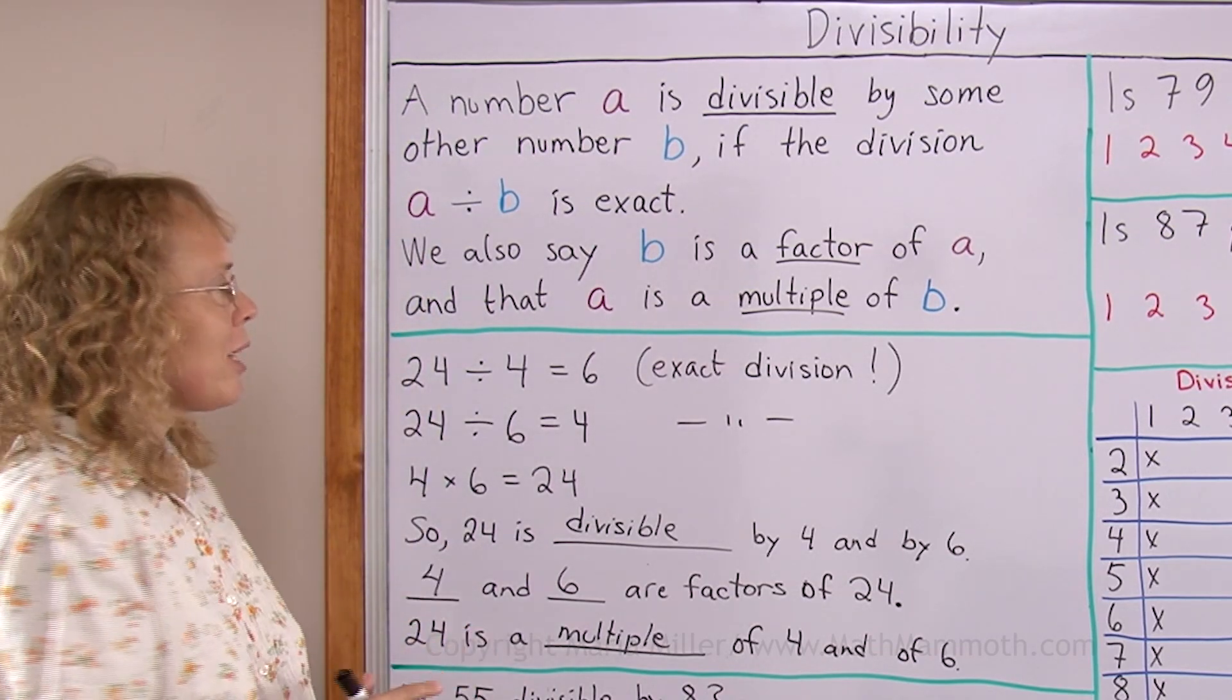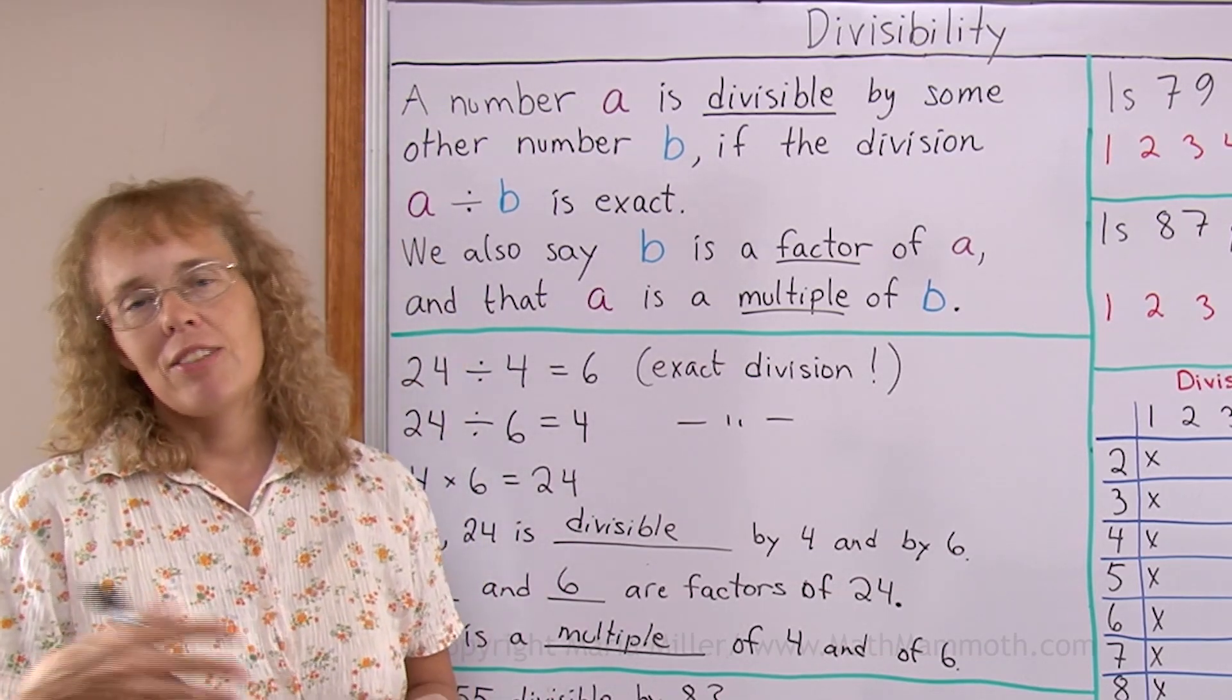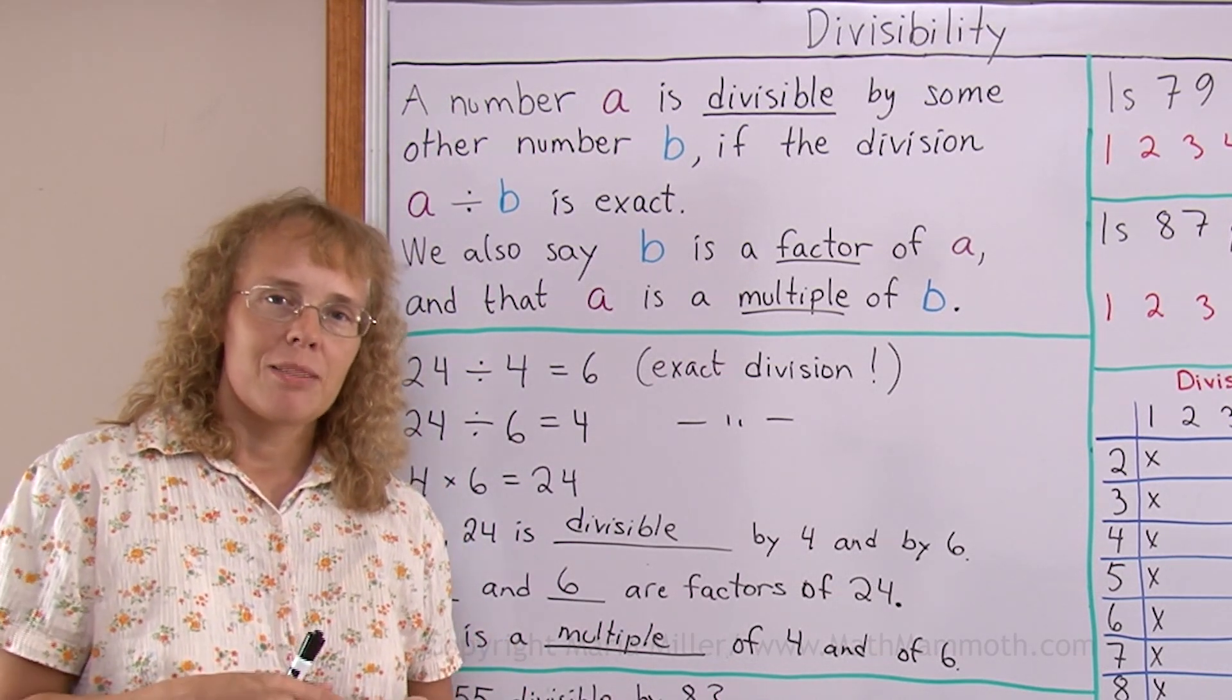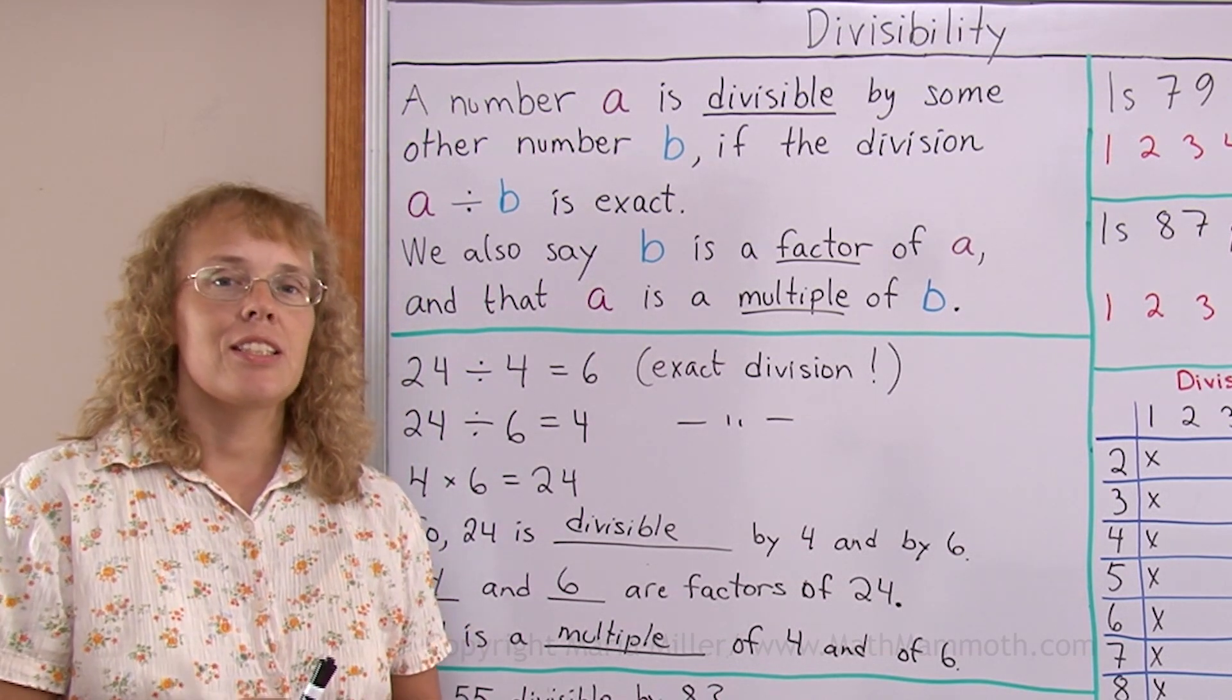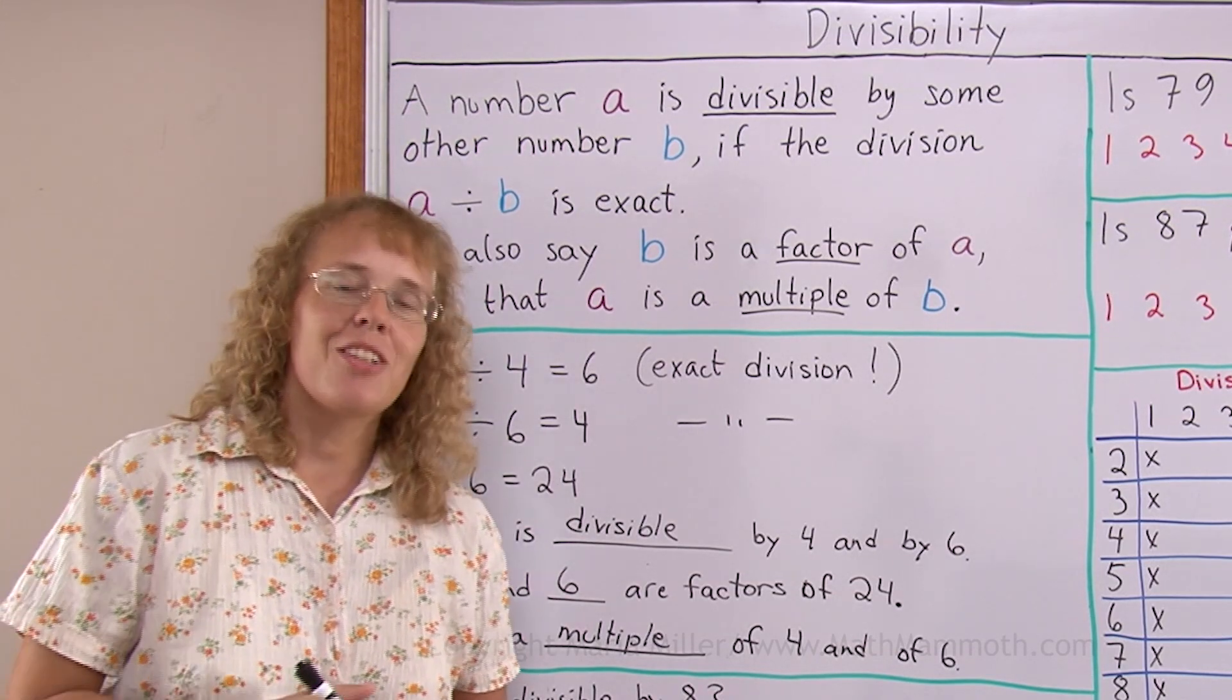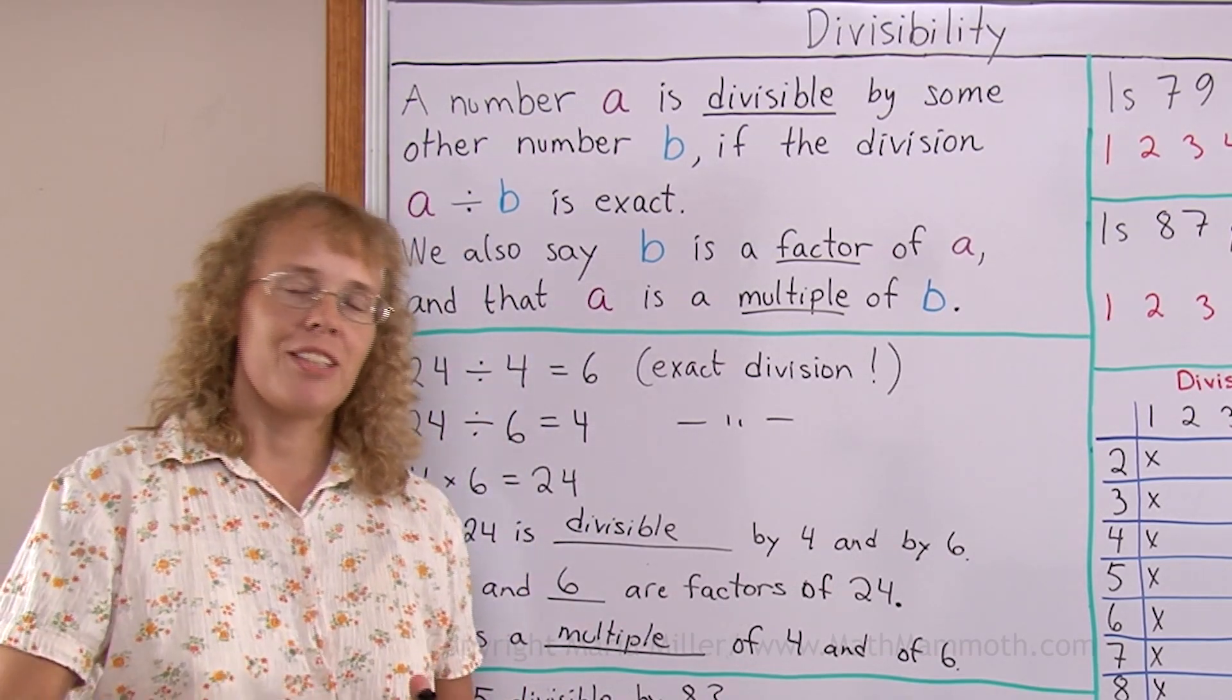And then multiples of 6 would be whenever you multiply something times 6. You might have 5 times 6 or 15 times 6 or 2,400 times 6. But multiples of 6 would be the multiplication table of 6, those numbers that are in the skip counting pattern by 6: 6 and 12 and 18, 24, 30, 36 and so on. Those are multiples of 6, because you multiplied 6 by something to get them.